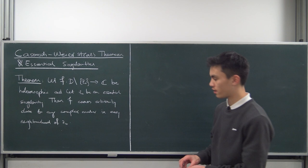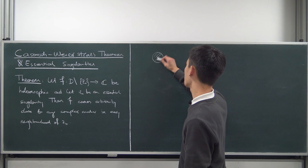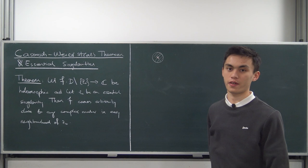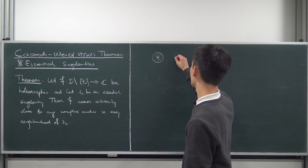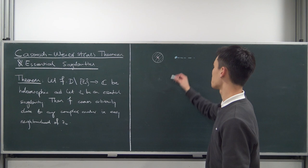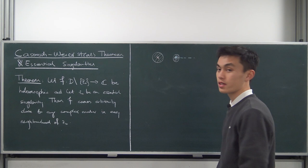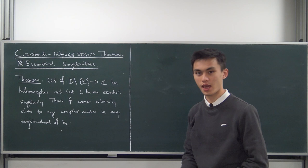Essential singularities are a type of what we call isolated singularities. If a point in the complex plane is a singularity of some function, it's isolated if you can form some punctured open disk around it — punctured meaning you don't include that specific point in the middle — where the function is holomorphic on that disk. Now, branch points are not isolated because no matter how small you make the open punctured disk, you always include part of the branch cut, so the function isn't holomorphic there. In this video we won't be talking about branch points, just isolated singularities.